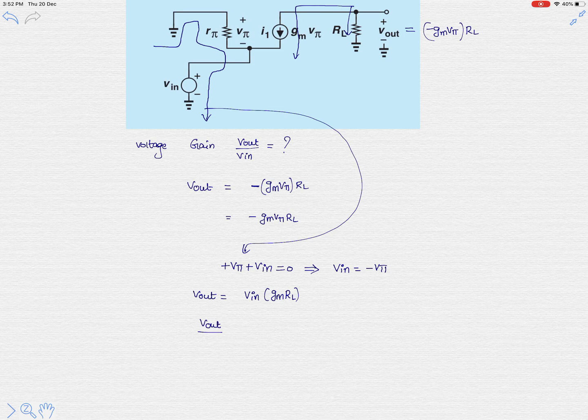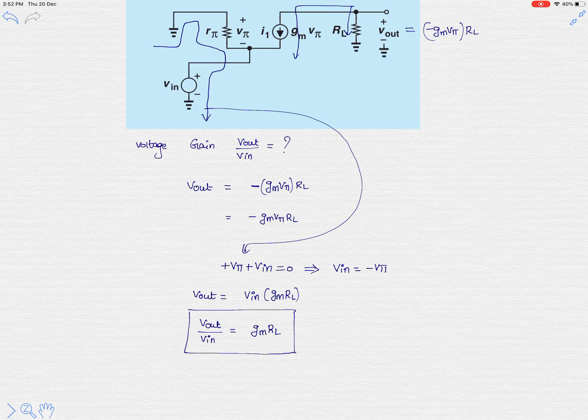Now we are interested in the ratio of V out to V in, that is gm multiplied with RL. This is the gain of this amplifier topology. Thank you for watching, please subscribe to my channel.